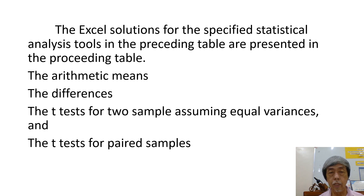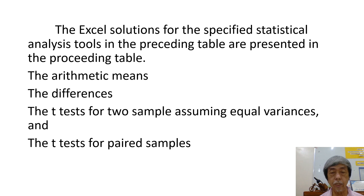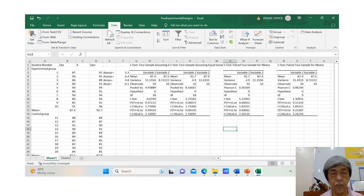The Excel solutions for the specified statistical analysis tools are presented in the accompanying table, showing the arithmetic means, the differences, the t-test for two samples assuming equal variances, and the t-test for paired samples. This is the Excel sheet that shows the solutions to all those specified statistical analysis tools.